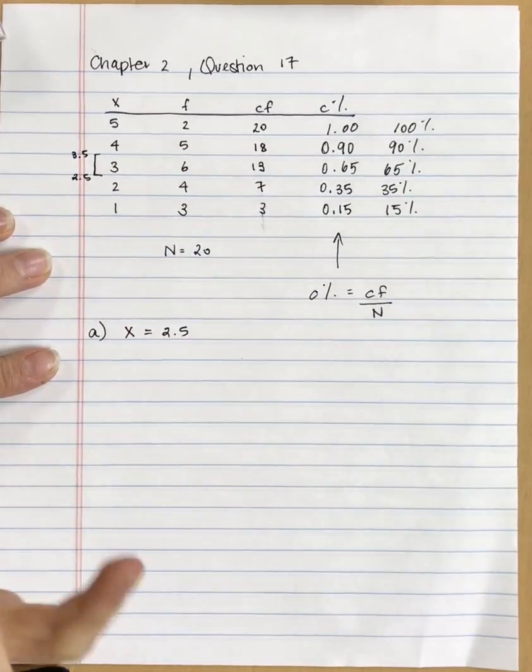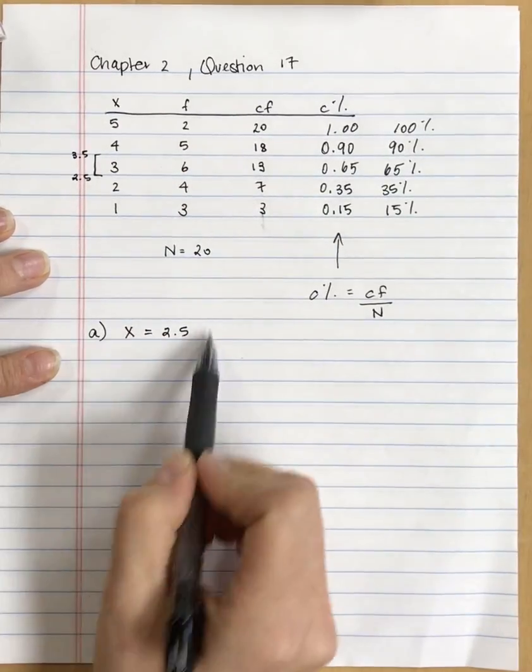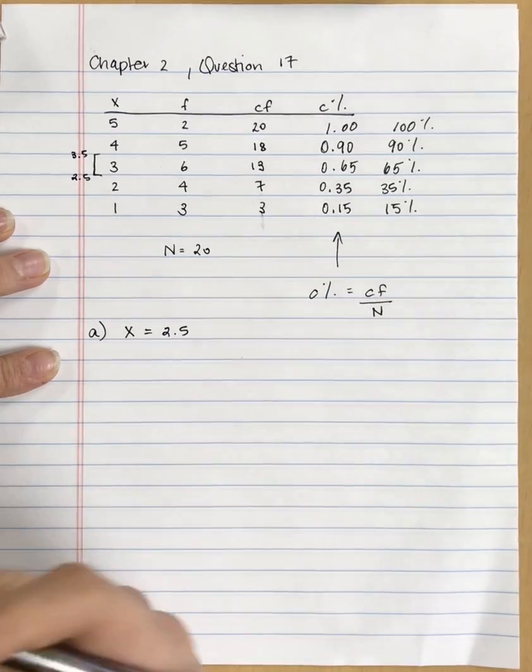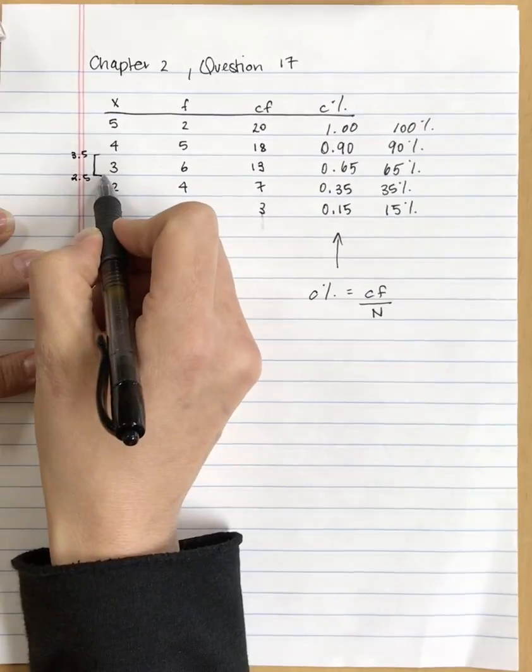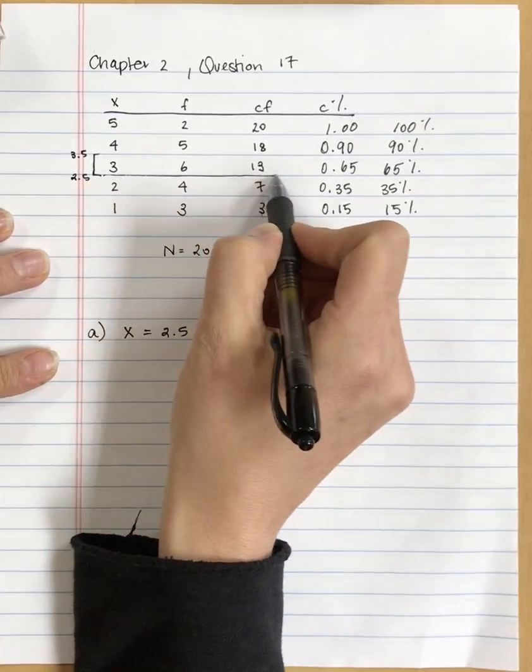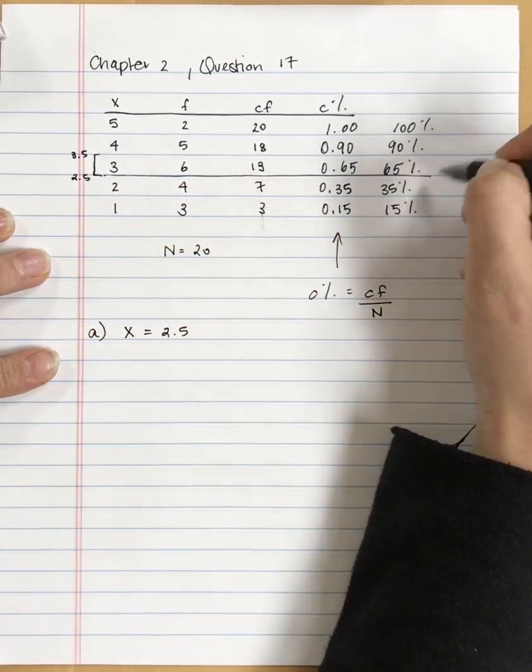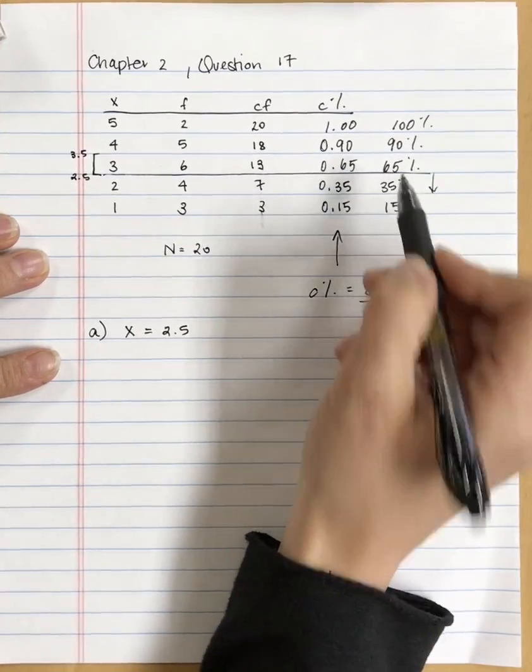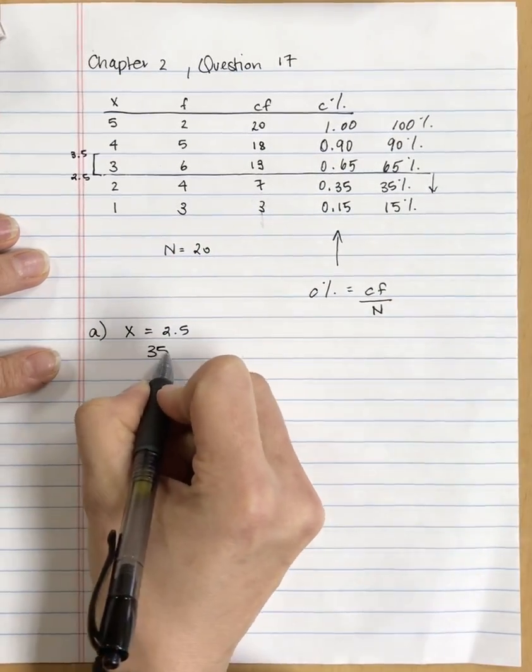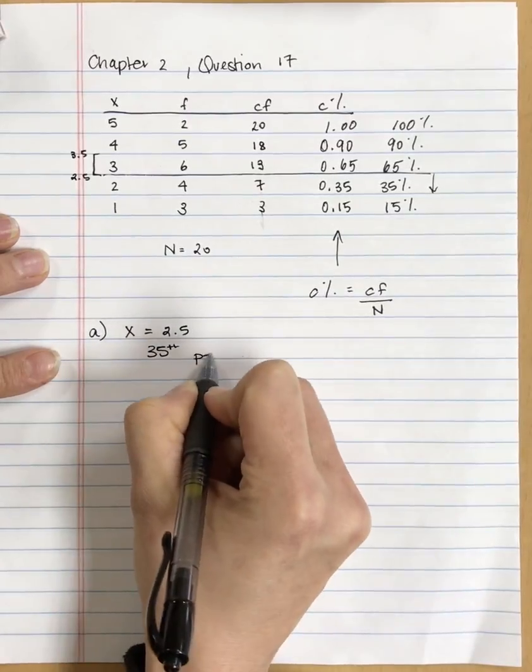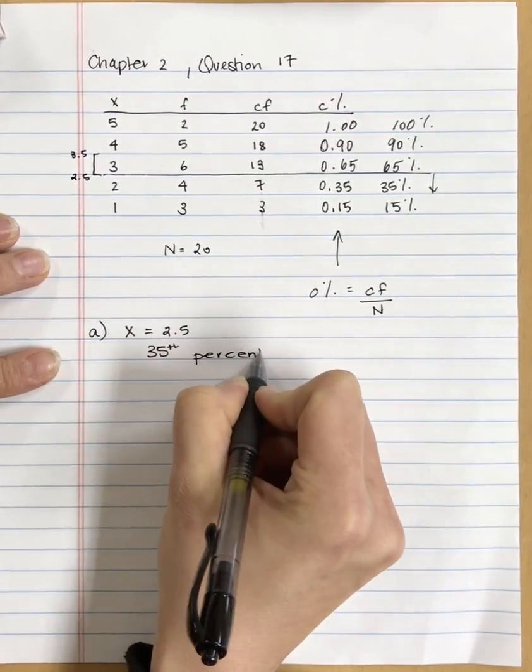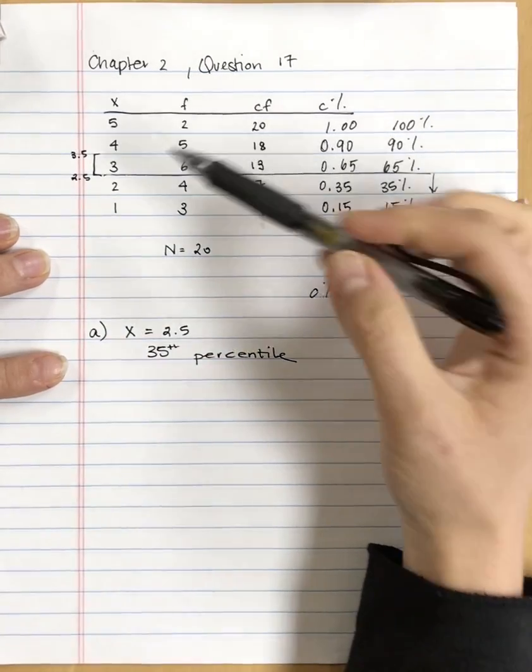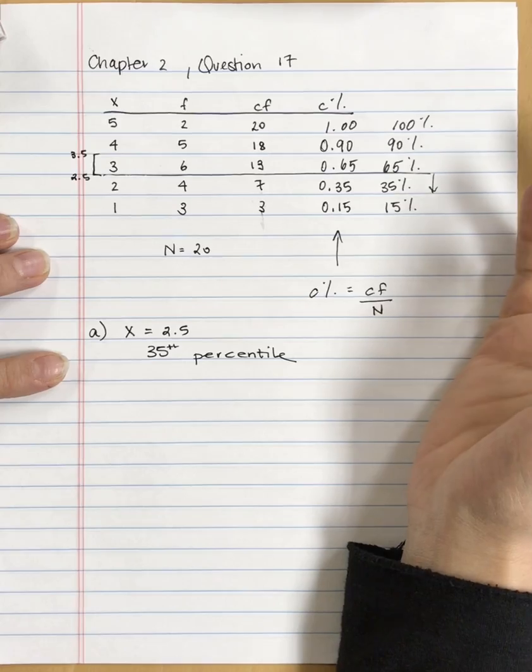So if we want to find the percentile that's associated with 2.5, this is relatively easy because we can go across right here and we can see that a score of 2.5 is associated with the 35th percentile. And we can read that right off of our chart because it corresponds to a real limit.